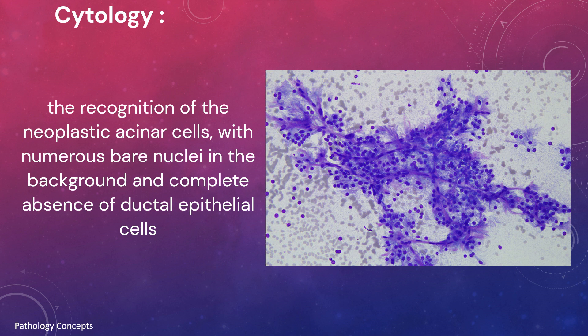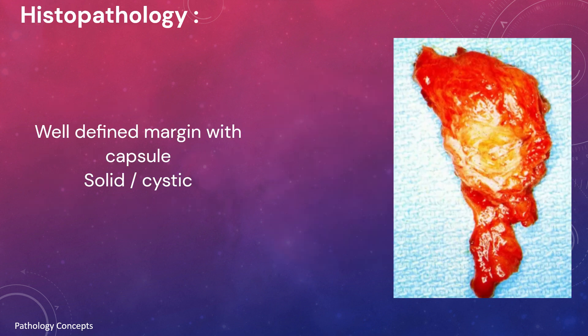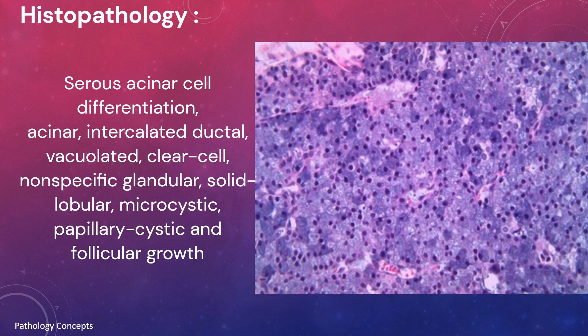Now let's see the histopathology. The gross specimen has a well-defined margin with a capsule and can be solid or cystic. In microscopy, the most common pattern is serous acinar cell differentiation. Other patterns include acinar, intercalated ductal, vacuolated, clear cell, non-specific glandular, solid lobular, and microcystic.